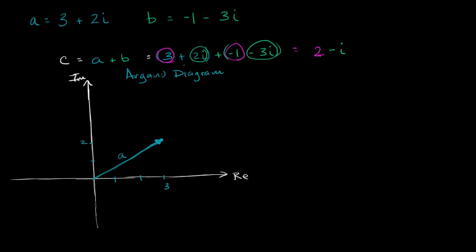Now let's do the same thing for vector b. It is negative 1 along the real axis and negative 3 along the imaginary axis. 1, 2, 3. So it gets us right over there. If we represent it as a vector, vector or complex number b could be visualized this way.